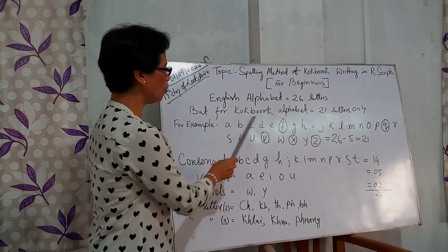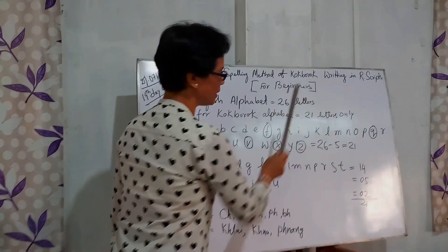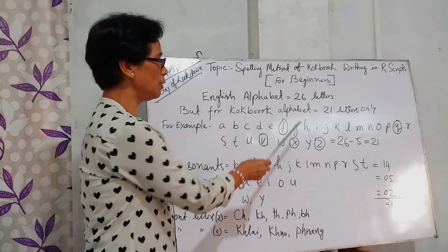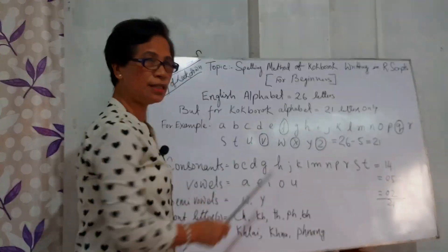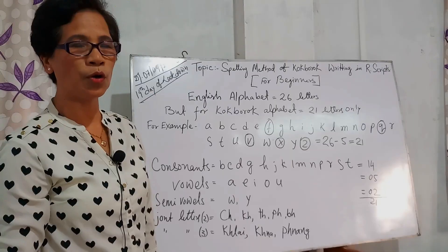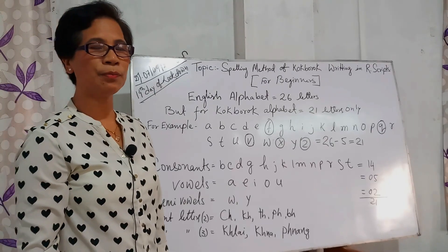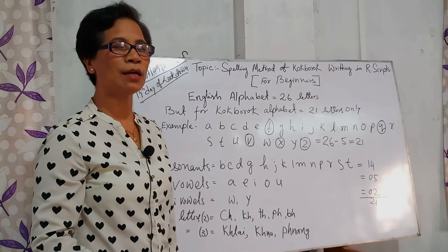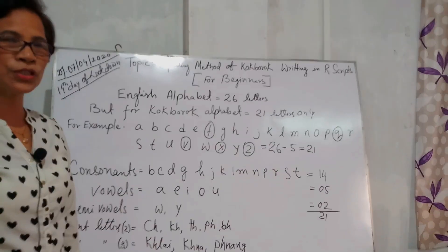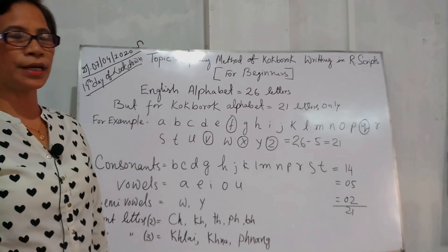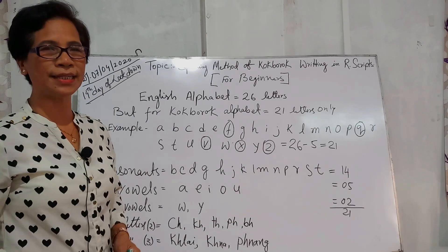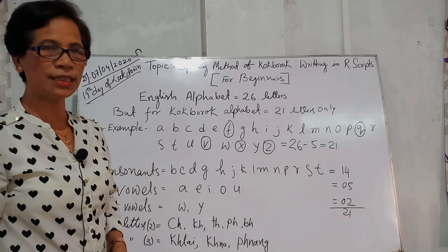But for the spelling method of Kokbarok there are 21 letters. Kokbarok used to use 26 letters, but in Bangladesh they used to apply usage in the writing of Kokbarok. It is used in English, while Kokbarok used to work on the script, but they settled on 21 letters.